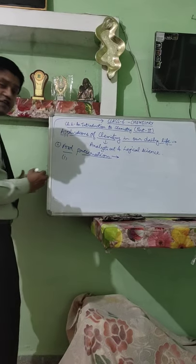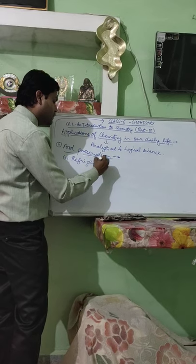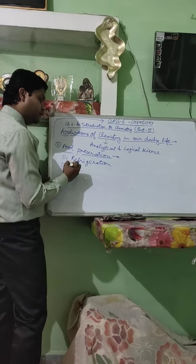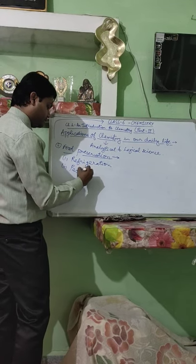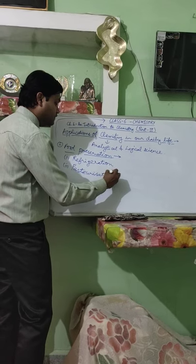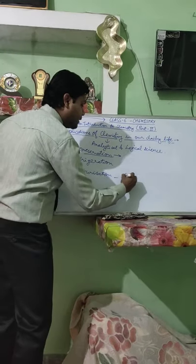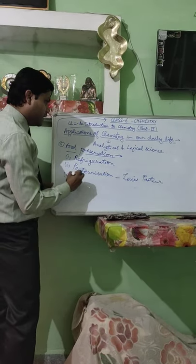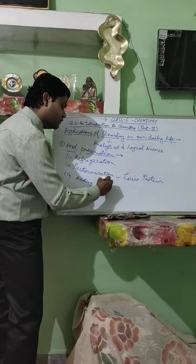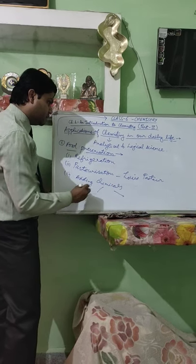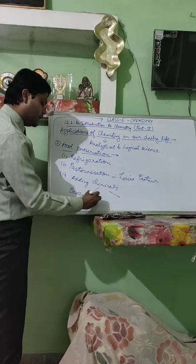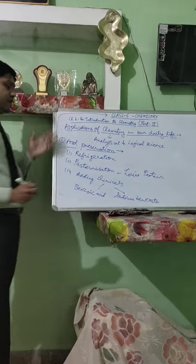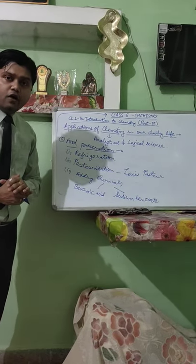The main techniques used for food preservation are: first, refrigeration — keeping food at a lower temperature. Second, pasteurization. This technique was discovered by scientist Louis Pasteur, and according to his name it was named pasteurization. Third, adding of chemicals. The two main chemicals used for preservation are benzoic acid and sodium benzoate. These are the methods we use for saving food for a longer time.